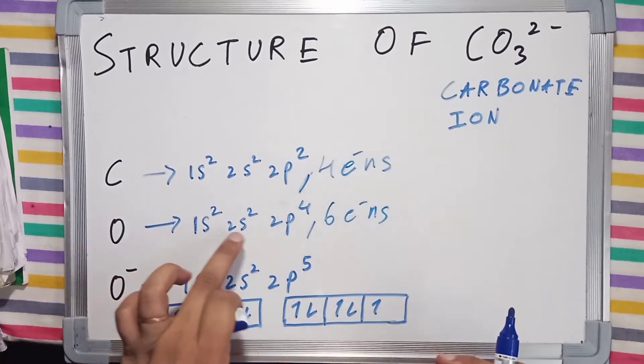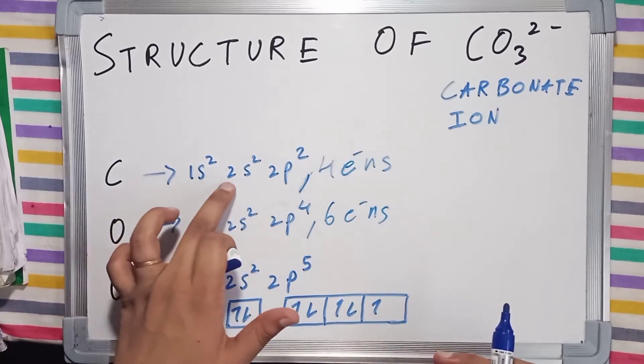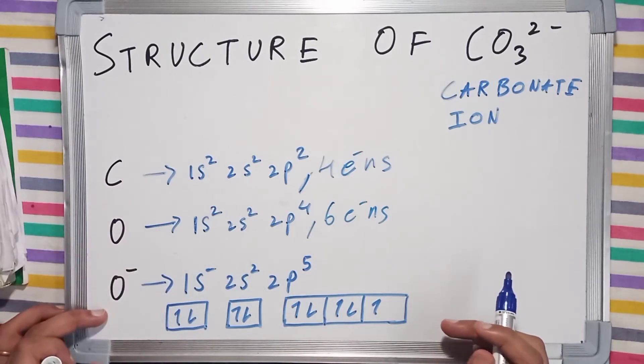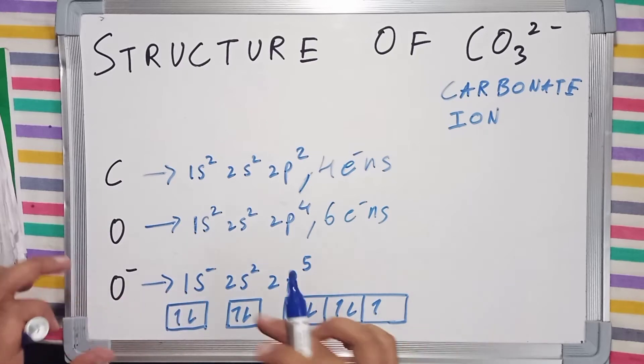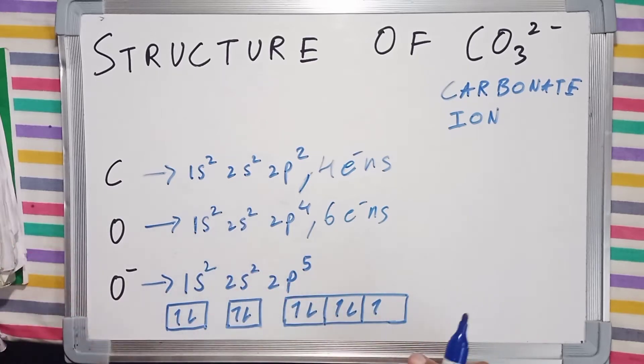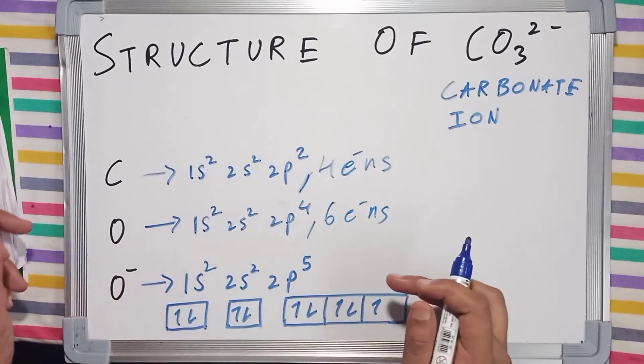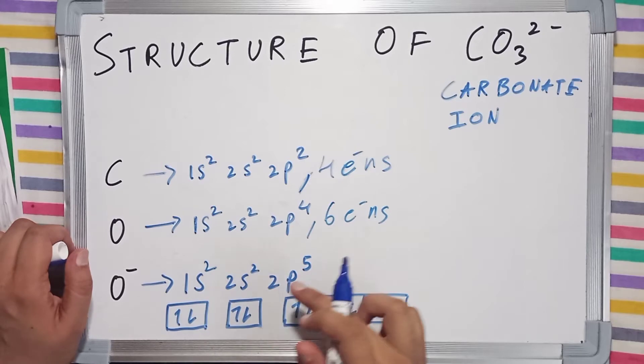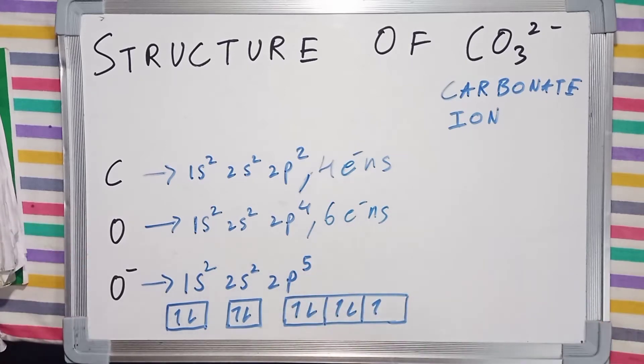Its valence shell is the second shell, same as carbon. We are also going to discuss the oxide ion O⁻, which has an extra electron in its valence shell. Its electronic configuration increases by a single electron and becomes 1s² 2s² 2p⁵.